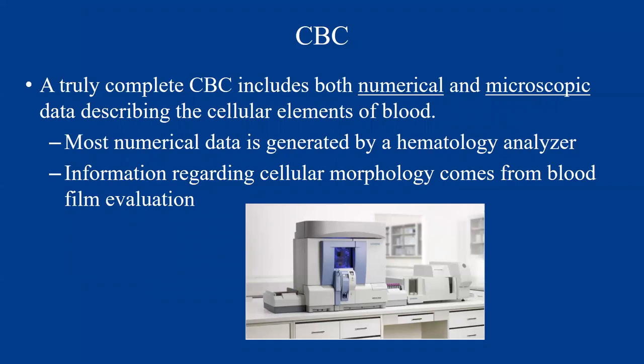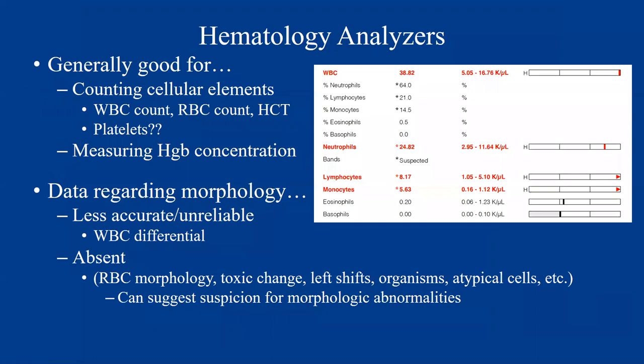A truly complete CBC includes both numerical and microscopic data describing the cellular elements of blood. Most numerical data is generated by a hematology analyzer. Information regarding morphology — things like infectious agents, atypical cells, shape changes — should truly come from blood film evaluation. Even these massive, really expensive analyzers can't do everything that we need them to do.